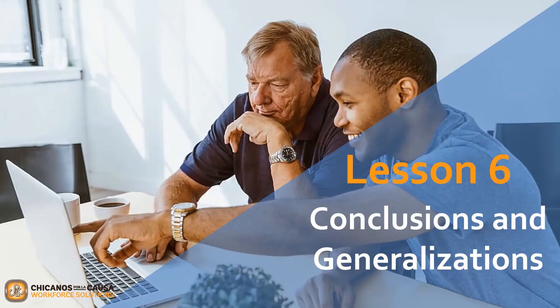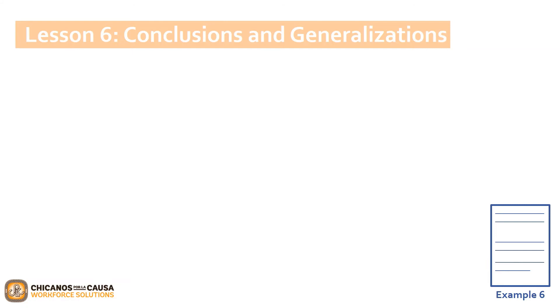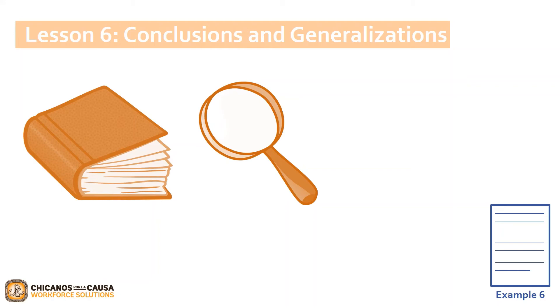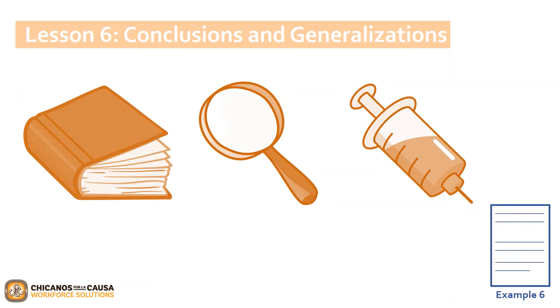We're moving right along to Lesson 6: Conclusions and Generalizations. As a reader, you can draw a conclusion when you take pieces of information and put them together to figure out something that the writer has not directly said. A detective draws a conclusion when he looks at different pieces of evidence and figures out who committed a crime. Meanwhile, a doctor draws a conclusion when she looks at different symptoms and figures out what illness the patient has.